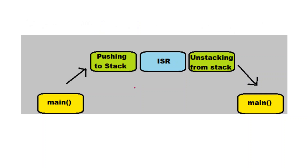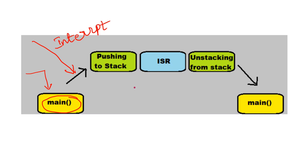Now let's see how the processor executes an interrupt. At first, the processor starts executing the main program. Whenever an interrupt occurs — either software or hardware — before going to execute the ISR, our processor should store the stack address, meaning the return addresses. Because after completing the ISR, the processor control should return back to the main program. That's why, before jumping into the ISR, it is our responsibility to store the stack values.